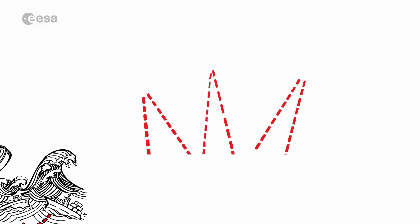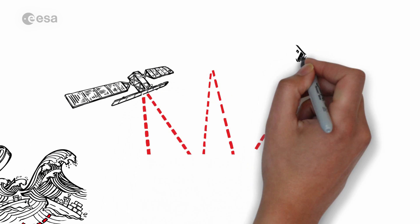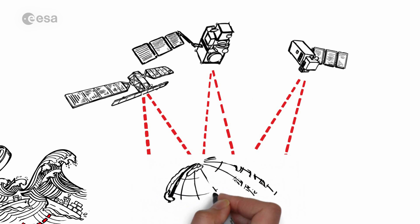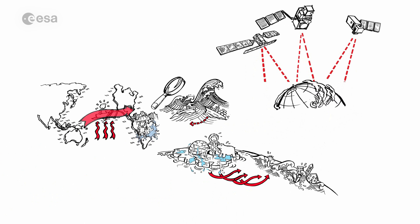Now the European Space Agency ESA, together with the European Commission and EUMETSAT, has launched its third Sentinel satellite, a satellite dedicated to the oceans and the properties of water.